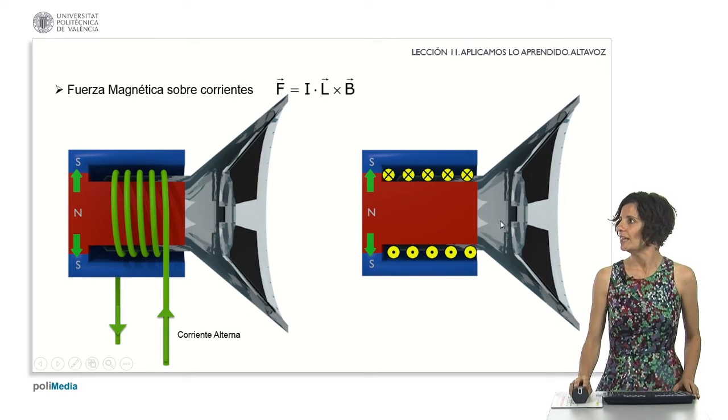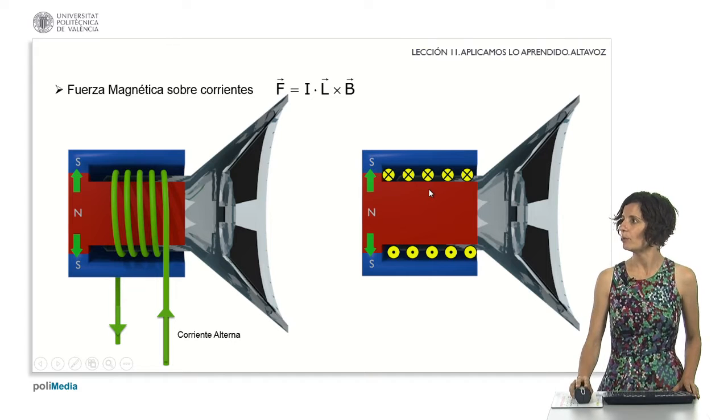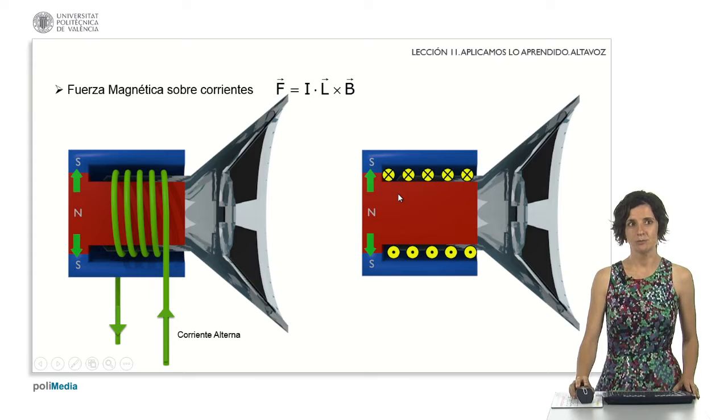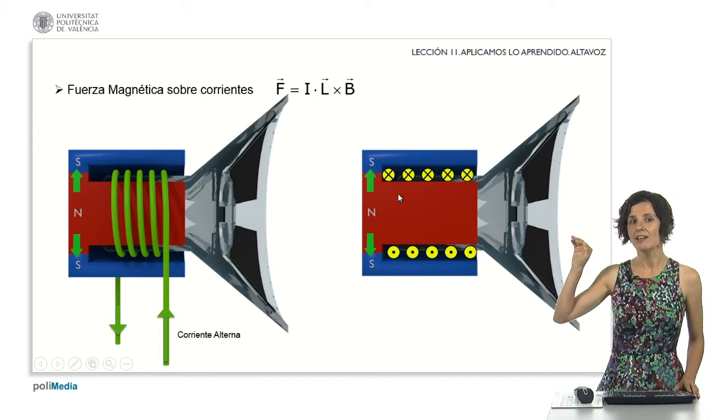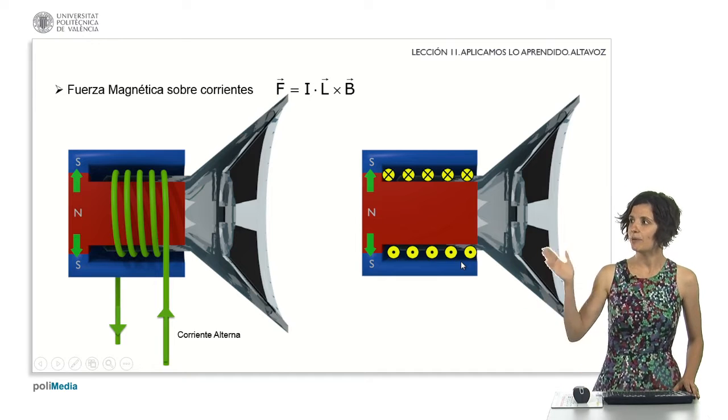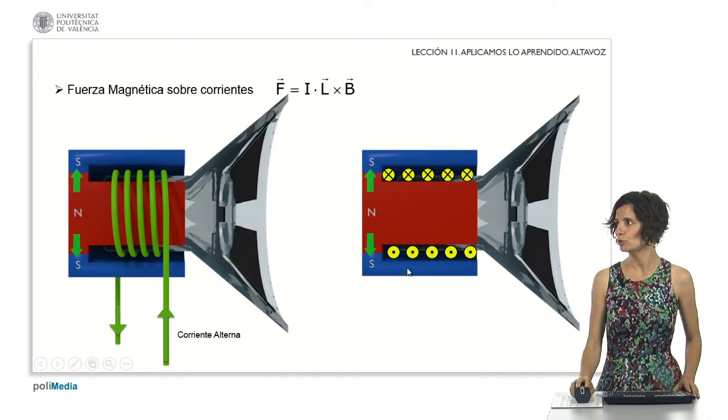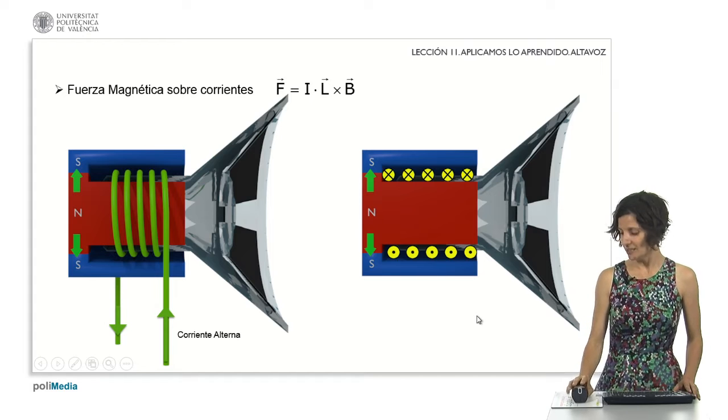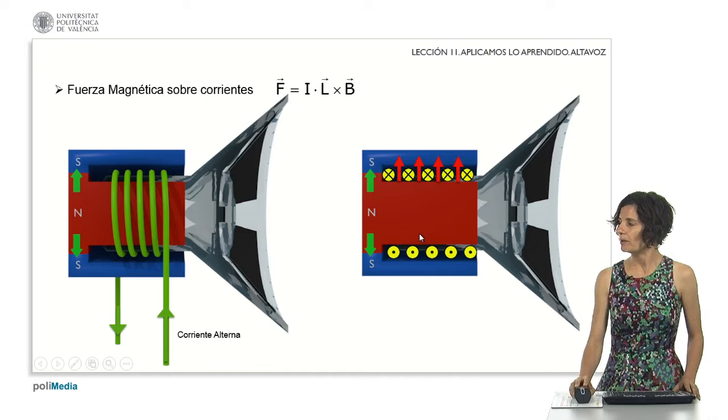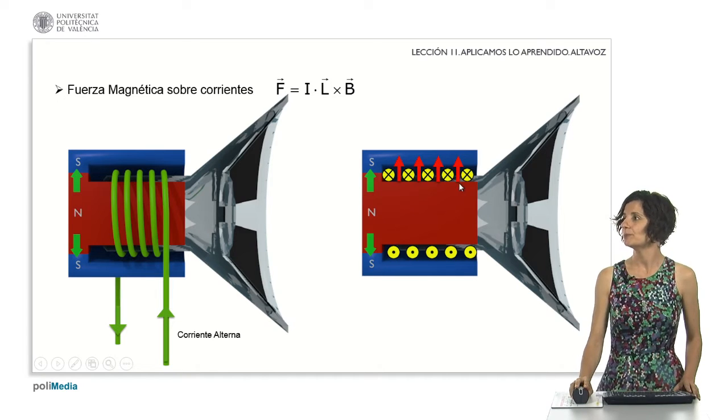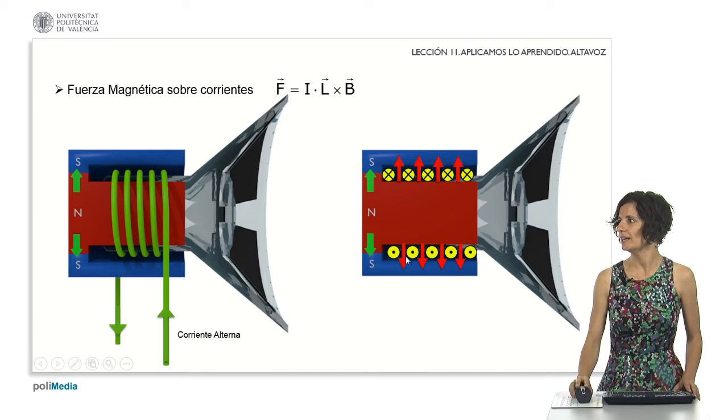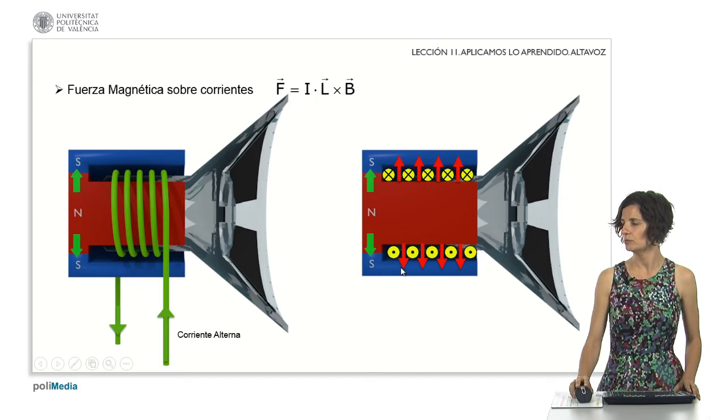In that case, in this image, which corresponds to the section of the loudspeaker, the current in the upper part should be illustrated with crosses, as it is perpendicular to the screen and directed inward. Meanwhile, in the lower part, the current would flux outward from the screen, hence represented by dots. This current is within a magnetic field generated by the permanent magnet. In the upper part, this magnetic field is vertical and upward, moving from the north pole to the south pole. In the lower part, it's vertical and downward, again traveling from the north pole to the south pole.